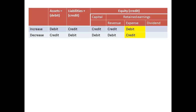Expense accounts usually have a debit balance. So to increase an expense account we debit the account. To decrease an expense we credit the account.